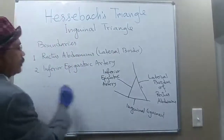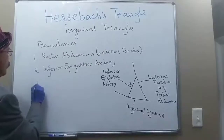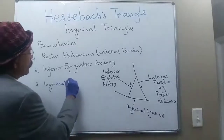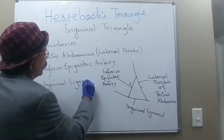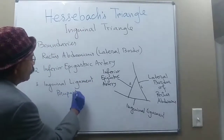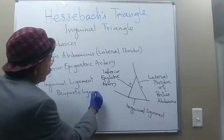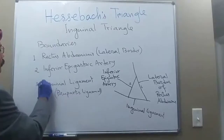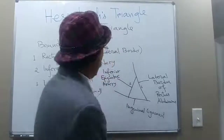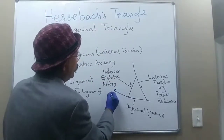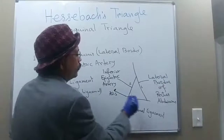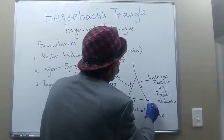Number three is the inguinal ligament, also called Poupart's ligament. The inguinal ligament is formed by the backward folding of the aponeurosis of the external oblique. It extends from the anterior superior iliac spine to the pubic tubercle.